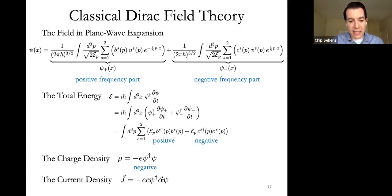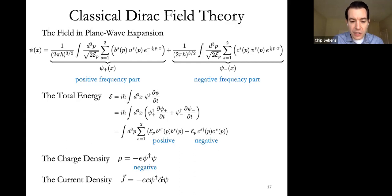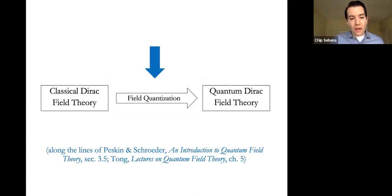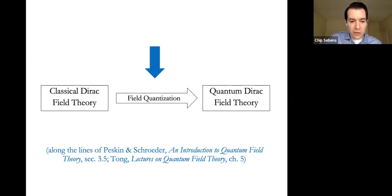We can also write the charge density: if the electron charge is minus e, the charge density is minus-e times psi-dagger-psi, which is negative everywhere since psi-dagger-psi is positive. We can write an expression for the current density as well.